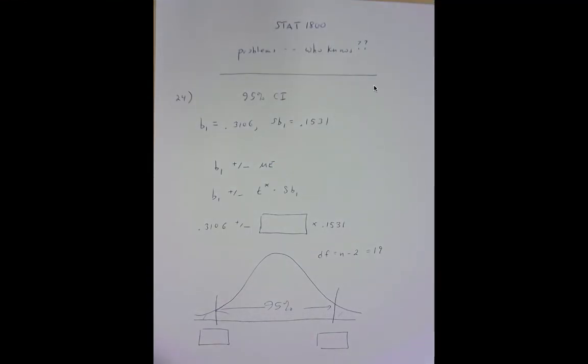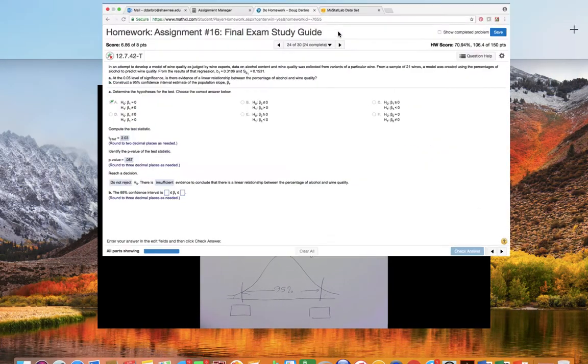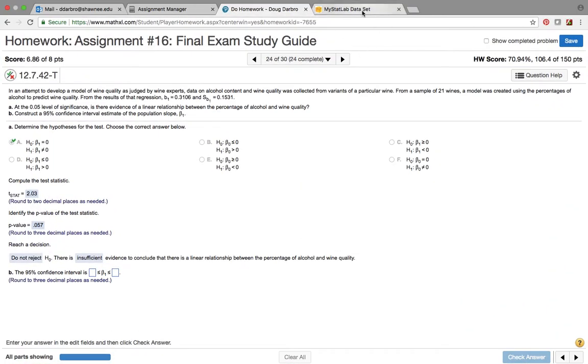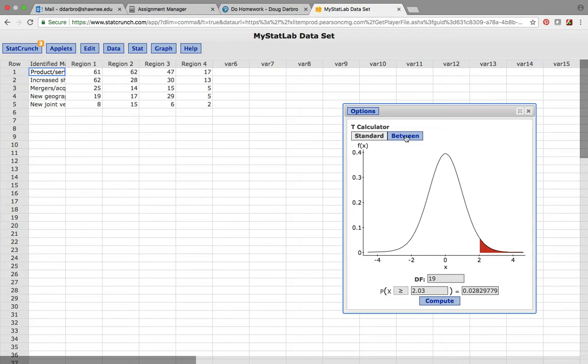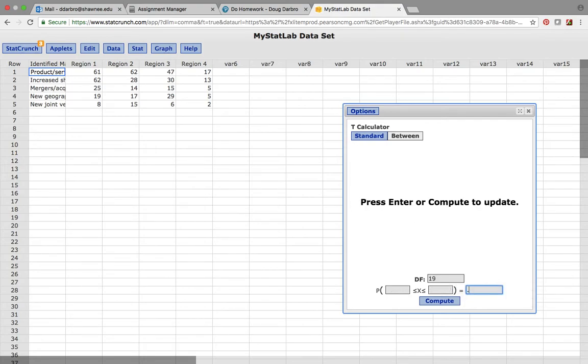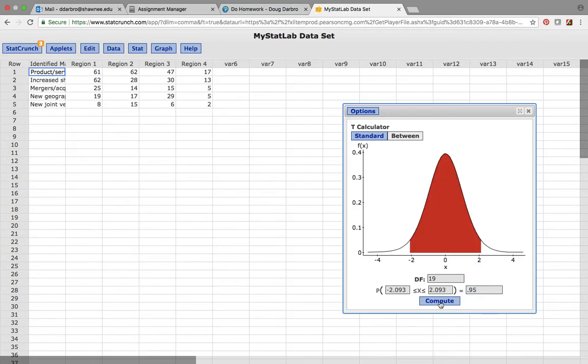So I think the easiest way to do that is to go to MyStatLab and I like to do between on these. Degrees of freedom 19, right, and I want the area in the middle to be 0.95. So when I get that, I get 2.093 as my critical value.